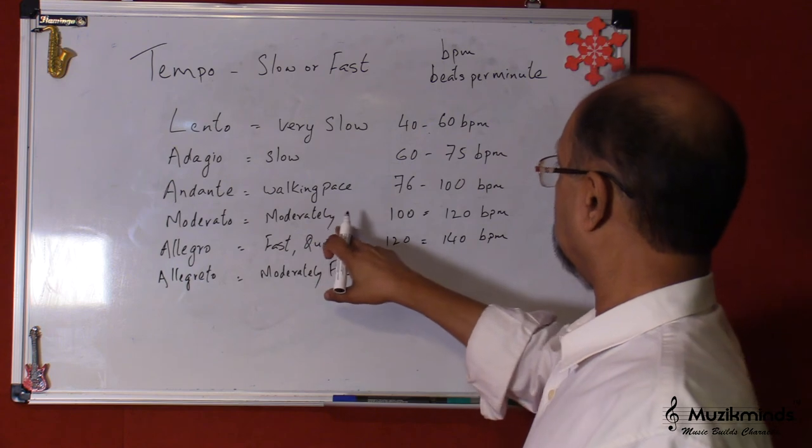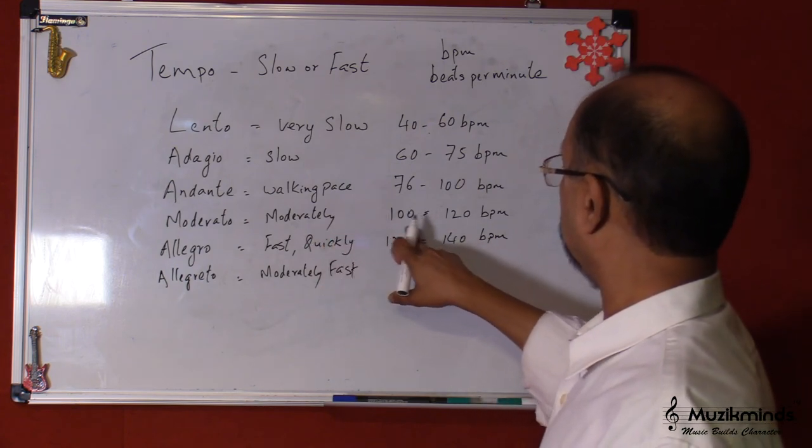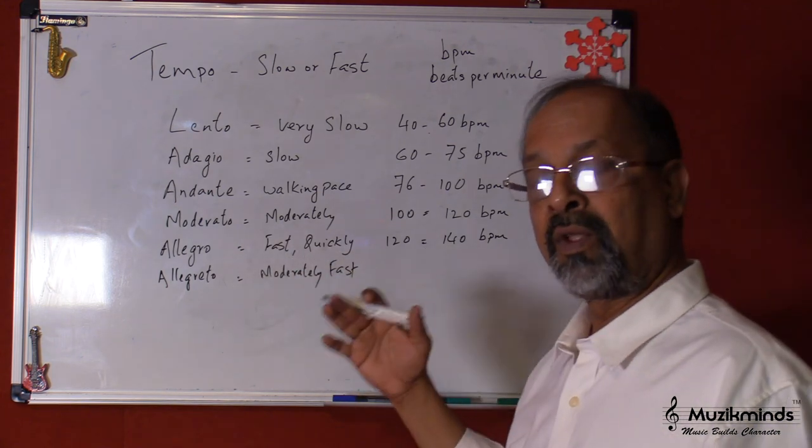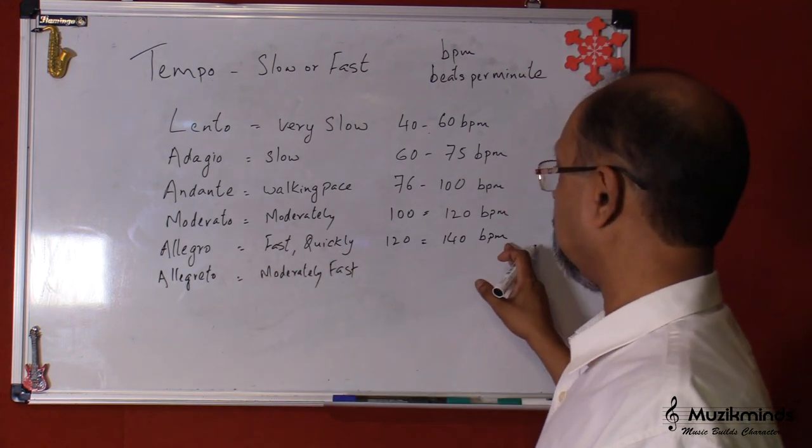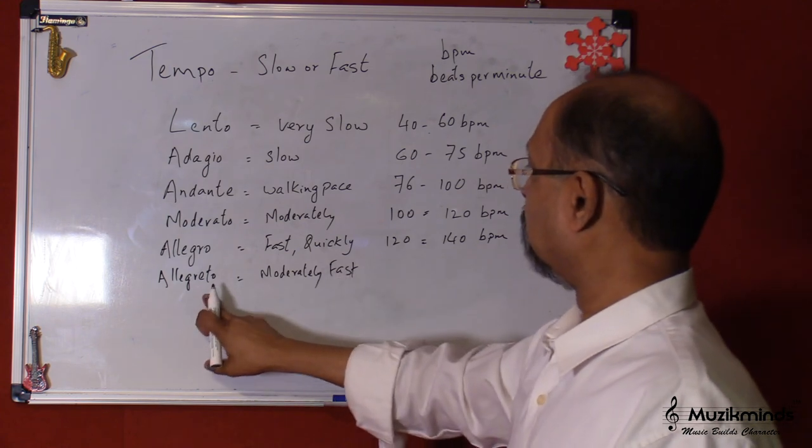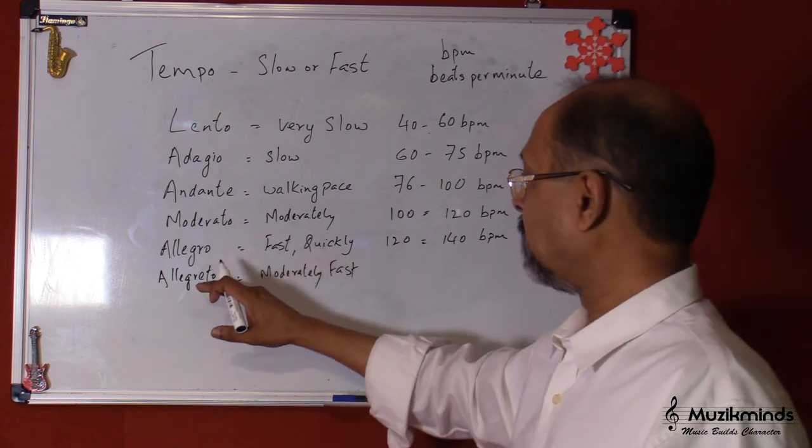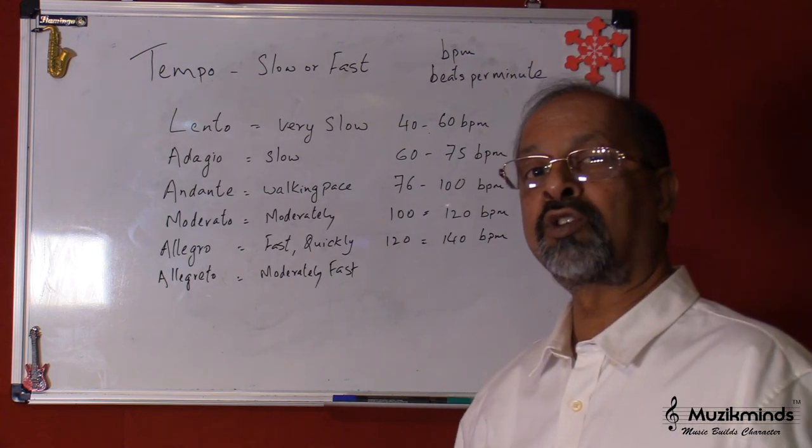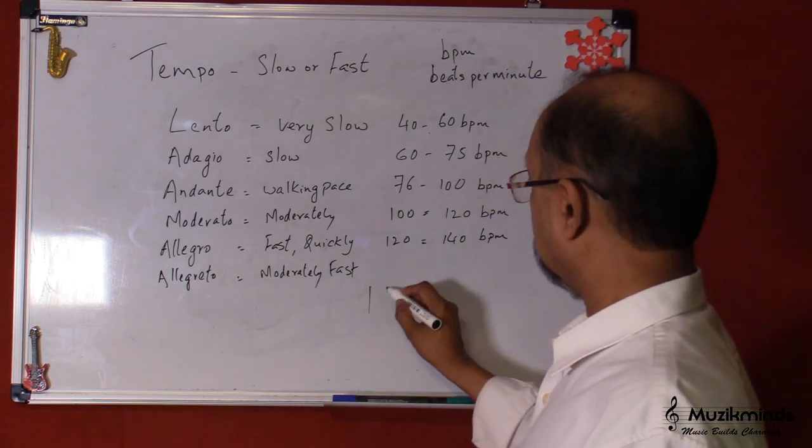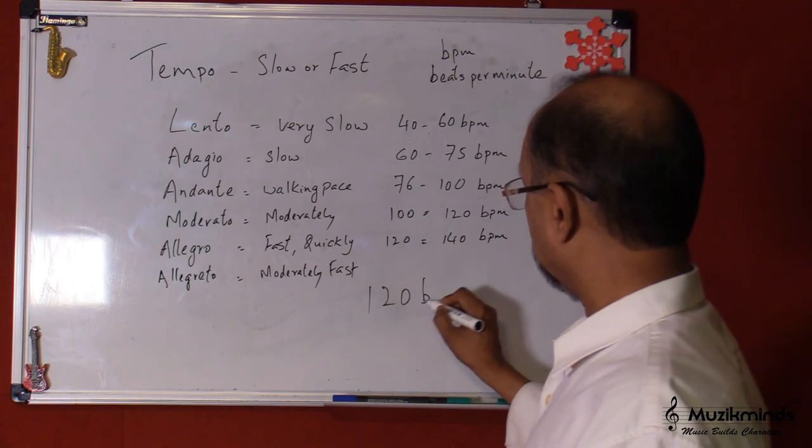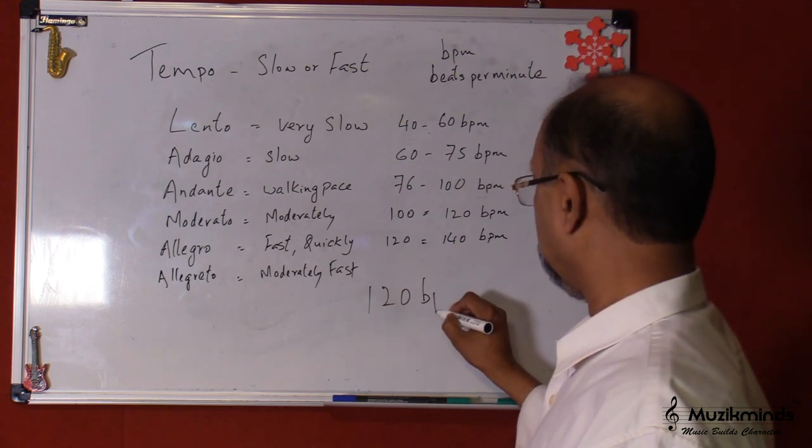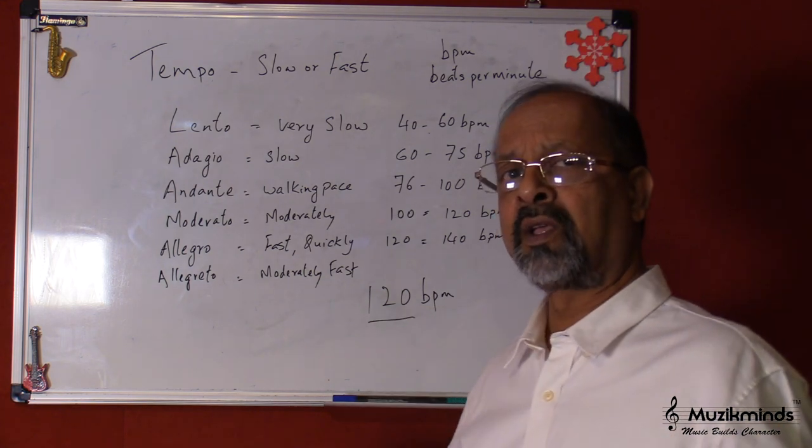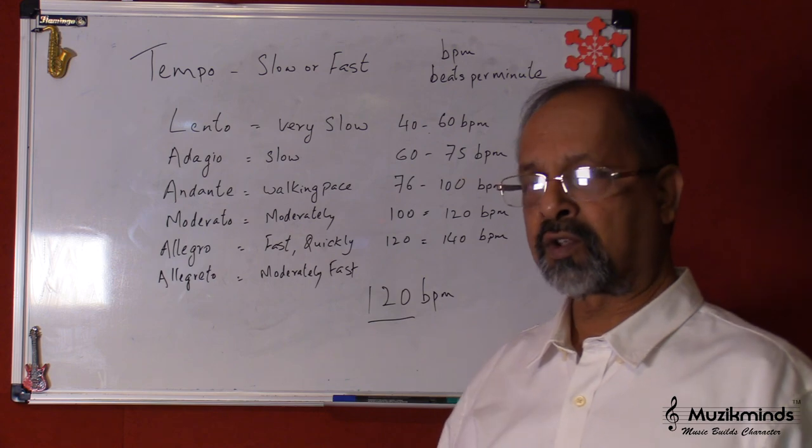Then moderately played is 100 to 120 BPM. Allegro is a little faster, so it's between 120 to 140 BPM. Now the usual, most of the songs are in the speed of 120 BPM. So this is kind of a standard which has been given for most normal songs, if they are not played fast or slow.